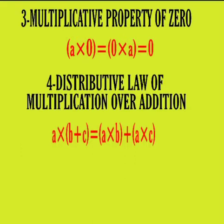Property number 4: Distributive law of multiplication over addition. For any whole numbers A, B, C: A cross (B plus C) is equal to A cross B plus A cross C.